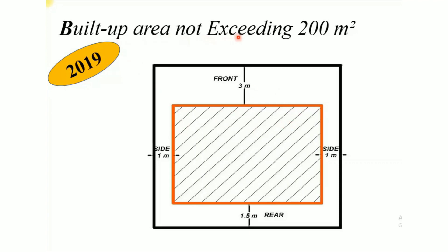Build-up period not exceeding 200 m². This 100 m² is not a plot — it is not a normal height. It is 3 meters in the front yard. In the building, it is 3 meters to the plot boundary. It is 1.5 meters on the rear side. Side-wise, it is 1 meter.